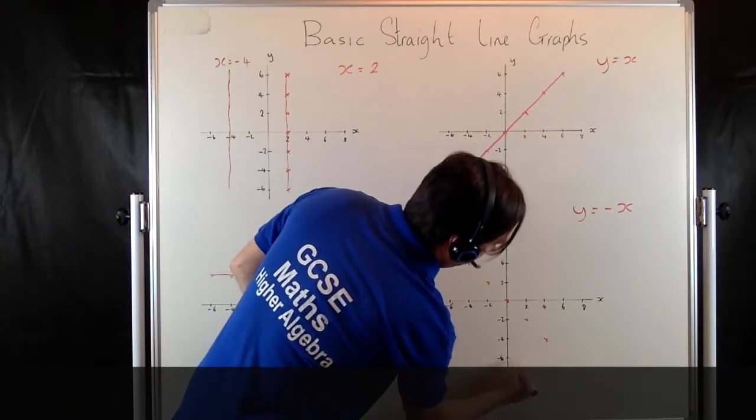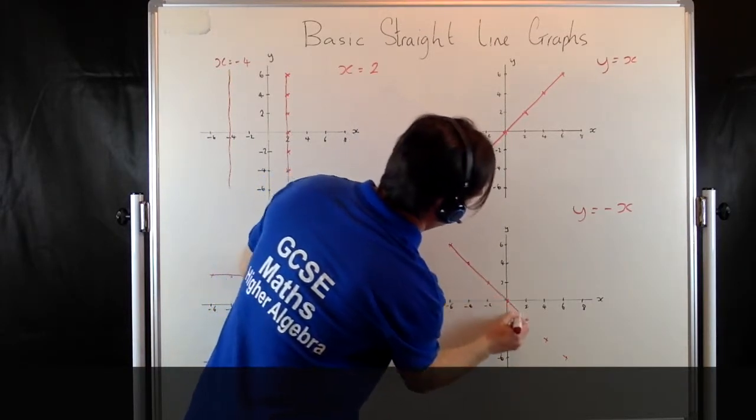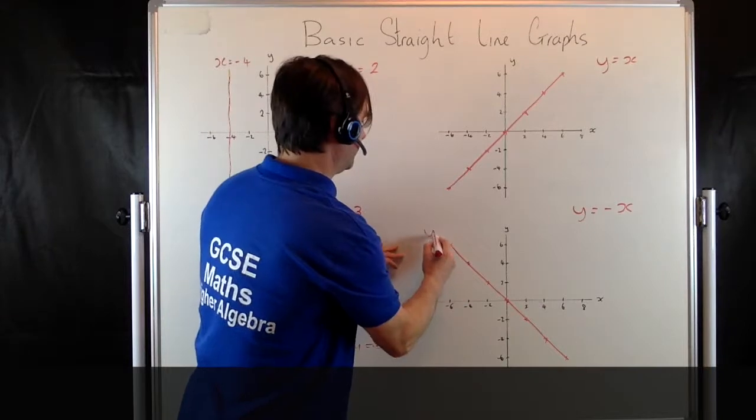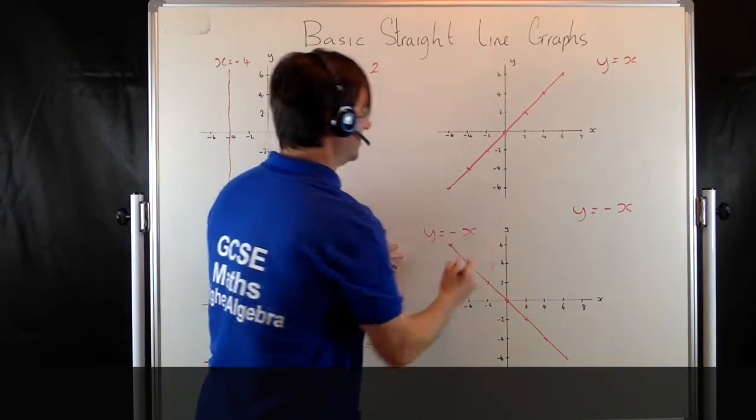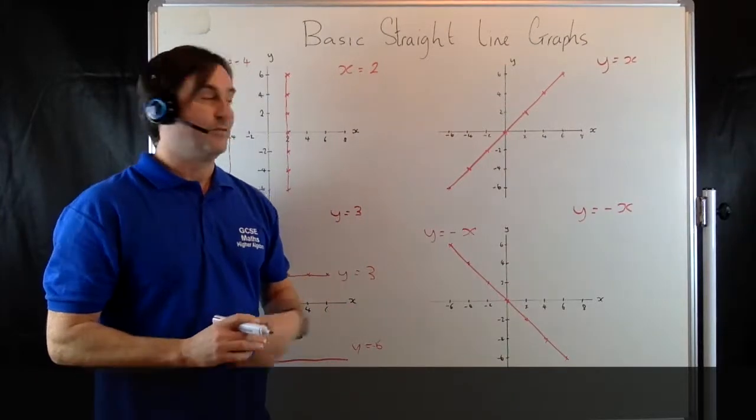So here we can plot this one on: negative 6, negative 6. It's going to be a downward sloping line from left to right. This is the graph of y equals negative x. These two graphs are extremely important for future reference.